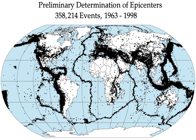The topmost, brittle part of the Earth's crust, and the cool slabs of the tectonic plates descending into the hot mantle, are the only parts of our planet which can store elastic energy and release it in fault ruptures. Rocks hotter than about 300 degrees Celsius flow in response to stress; they do not rupture in earthquakes. The maximum observed lengths of ruptures and mapped faults which may break in a single rupture are approximately 1,000 km.